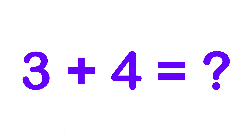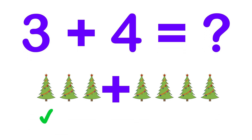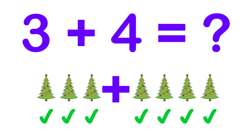3 plus 4 equals to what? 1, 2, 3, 4, 5, 6, 7. 3 plus 4 equals to 7.